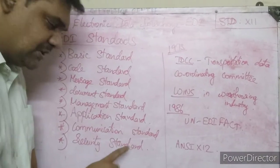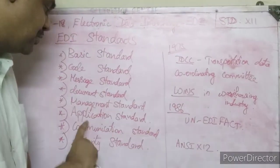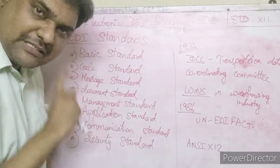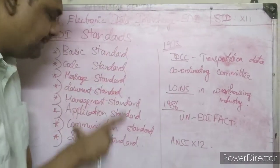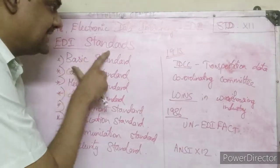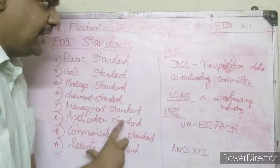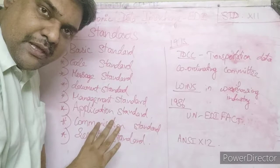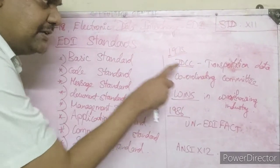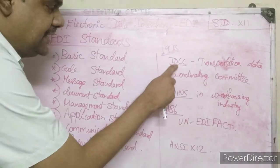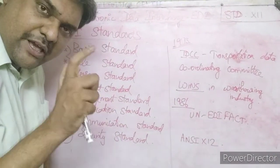There should be one common standard that all can accept. In 1975, the TDCC — Transportation Data Coordinating Committee — was one of the first companies to create a standard.